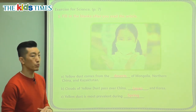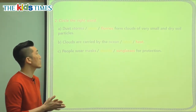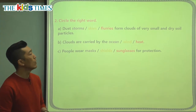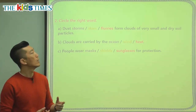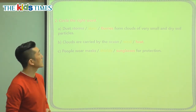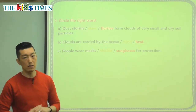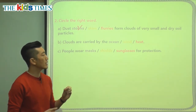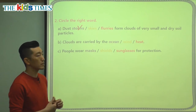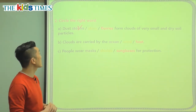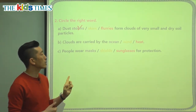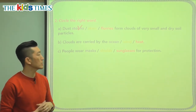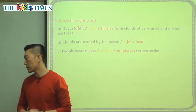So let's look at the last part of our article today and choose the correct word to finish the sentence. Dust storms, dust skies, or dust flurries form clouds of very small and dry soil particles. We know flurries are snow coming down, so that's not it. Dust skies doesn't make sense. So it's dust storms — they carry these small, dry particles of desert dust. The second question: clouds are carried by the ocean, the wind, or the heat? We know clouds travel through the sky, so it's carried by the wind.